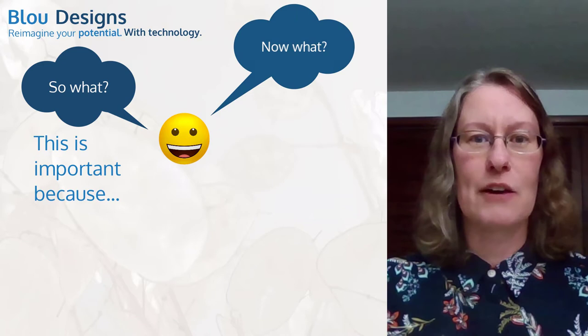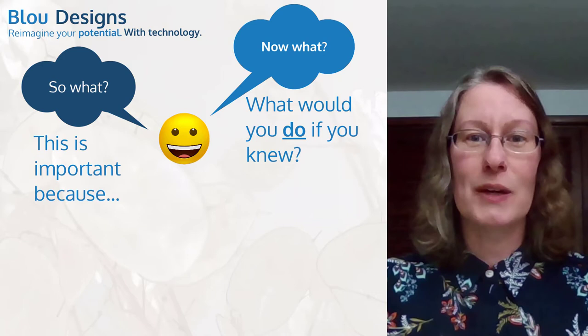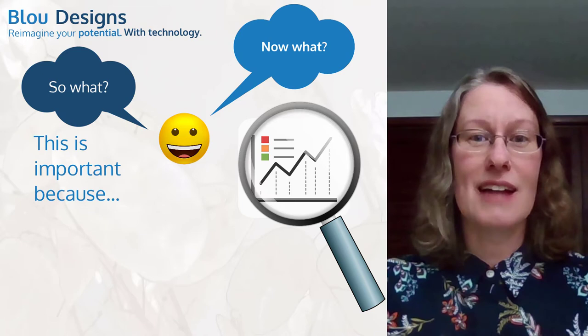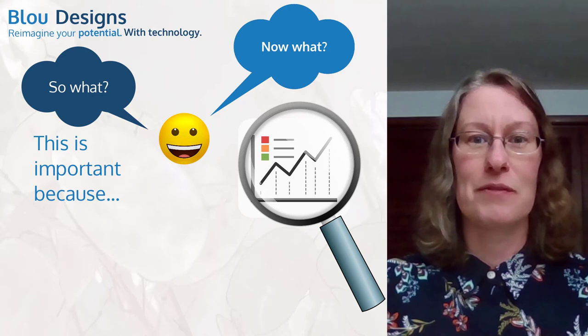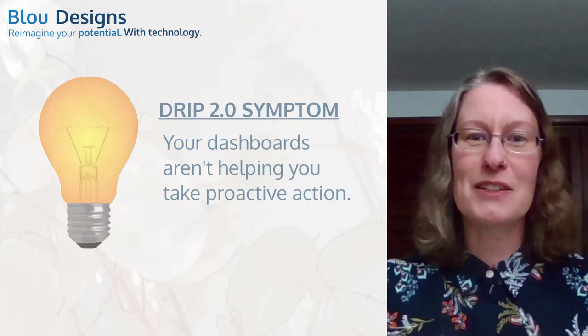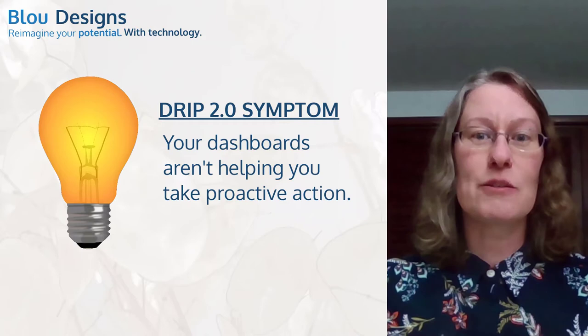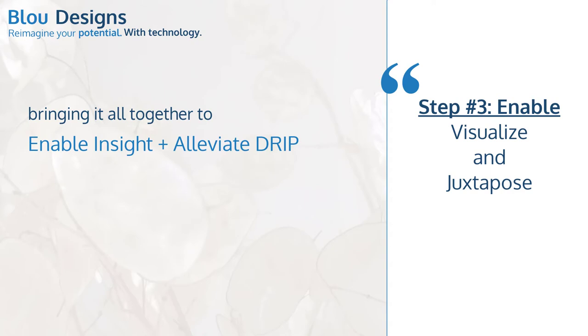As a second pass, you'll address 'now what': what would you do if you knew this information? To capitalize on what is working, what clues will your dashboard provide as to why? If something is not working, your dashboard should provide clues as to how you might revise that activity to make it more effective, or at least where to focus your investigation into why not. If you find yourself looking at dashboards but they're not helping you take proactive action, you might need to revise for 'so what, now what.'